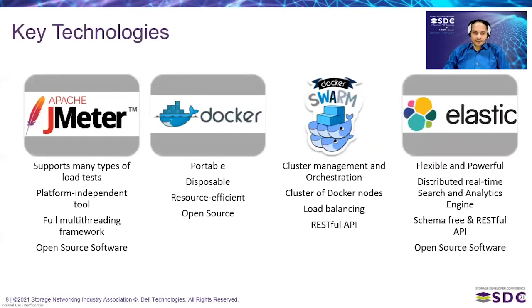The key open-source technologies are JMeter, Docker/Docker Swarm, and Elasticsearch. JMeter supports multiple workload types, is platform-independent, multi-threaded, open source, and industry-wide used for performance and load testing. Docker containers are simple, portable, easy to dispose of, and resource-efficient. Docker Swarm is the native orchestration solution used for cluster management, orchestrating nodes and jobs, and handles load balancing across containers.